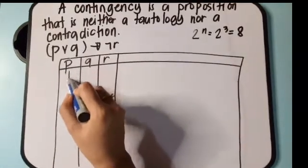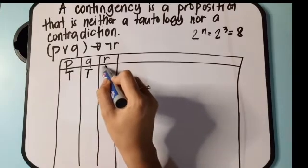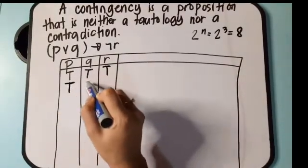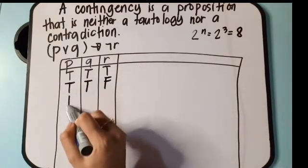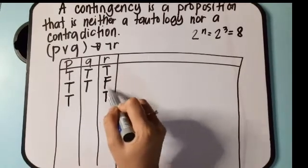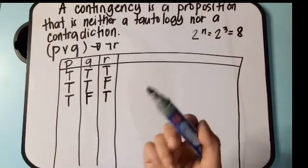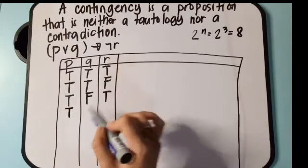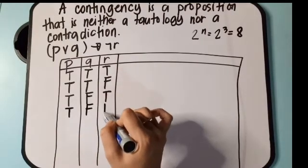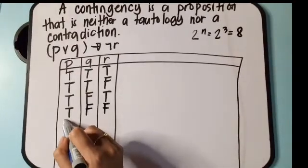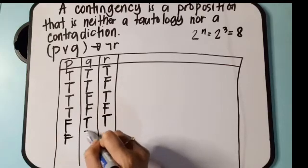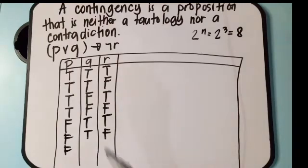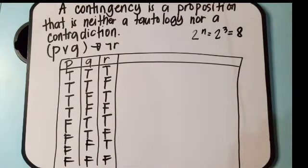The possible combinations of truth values for P, Q, R are: true-true-true, true-true-false, true-false-true, true-false-false, false-true-true, false-true-false, false-false-true, and false-false-false. Counting them — 1, 2, 3, 4, 5, 6, 7, 8.